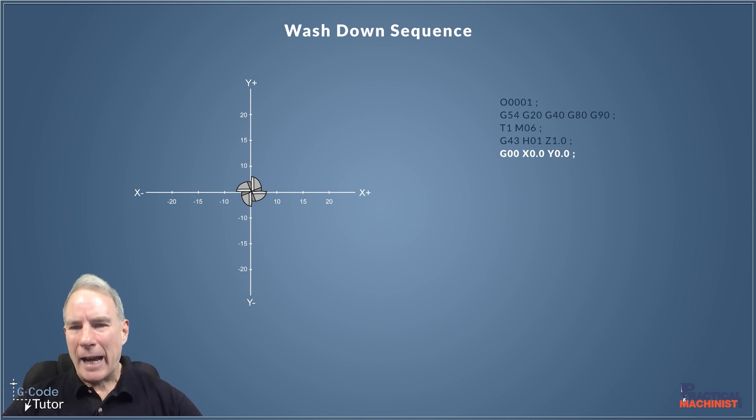So let's assume our table is empty, we have nothing loaded in the machine, Z0 set on the table height there on the surface of the table, so any Z minus movements will be going through the table so we want to avoid that at all costs.